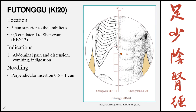Futonggu, Kidney 20, is located 5 cun superior to the umbilicus, 0.5 cun lateral to the midline, level with Shangwan (Ren 13). Indications: abdominal pain and distension, vomiting, and indigestion. Needling: perpendicular 0.5 to 1 cun.